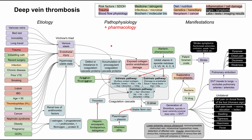This is a mechanism of disease map for deep vein thrombosis, or DVT. I'll be talking about the many etiologies, including Virchow's triad and examples for everything within it, the pathophysiology of DVT, as well as notes on pharmacology and how anticoagulants like warfarin and heparin affect this pathway. The manifestations and complications of DVT will also be discussed. All boxes are color-coded according to core concepts listed in the table up top.